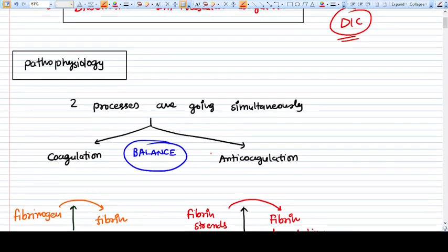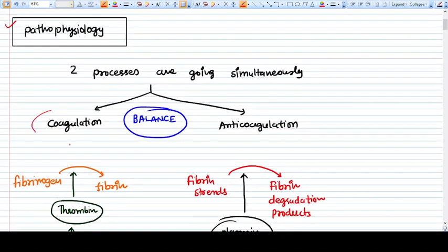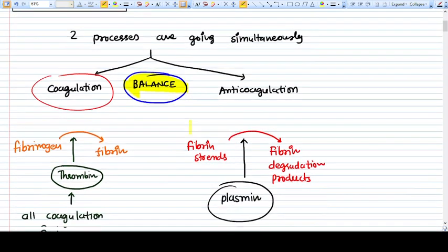Let's talk about the pathophysiology first. There are two processes going simultaneously in our body all the time: coagulation and anticoagulation. Both processes are going simultaneously inside our body and they have a fine balance. This balance is needed.